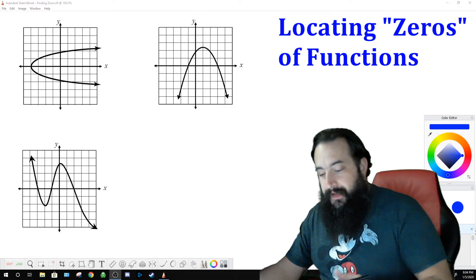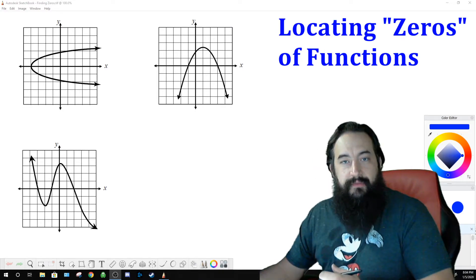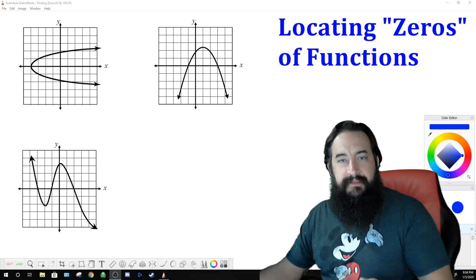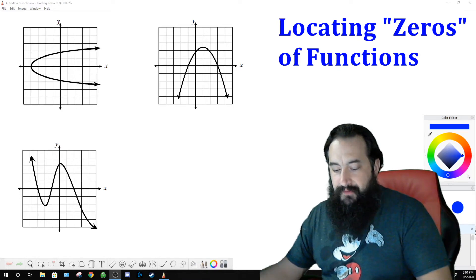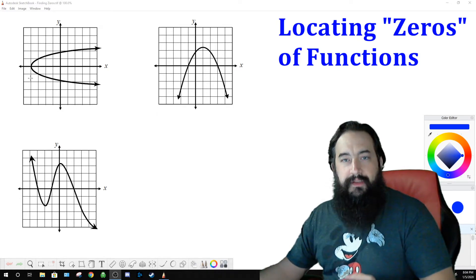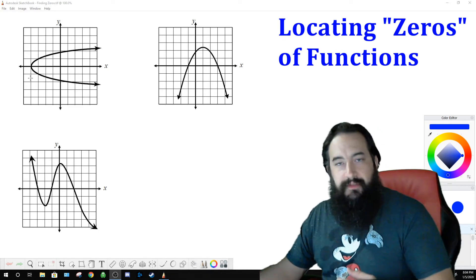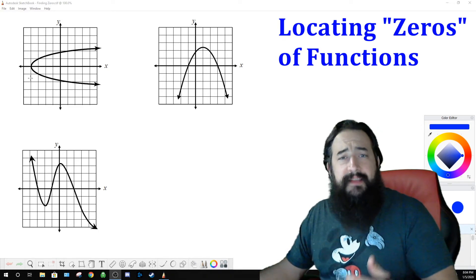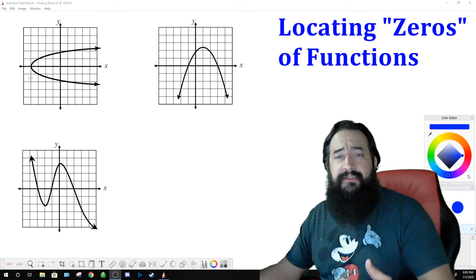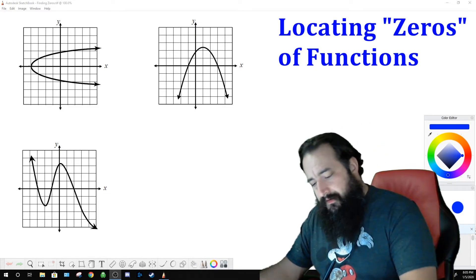At the top left we have this. That's actually a square root relation. It's not a function you could see because everything that is greater than negative four will yield two outputs for each input. So it's a relation, but that doesn't matter. It still has a zero because it still has a location where it's crossing the x-axis, right here.